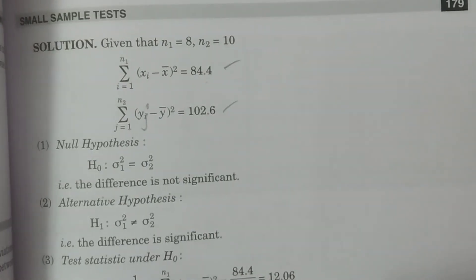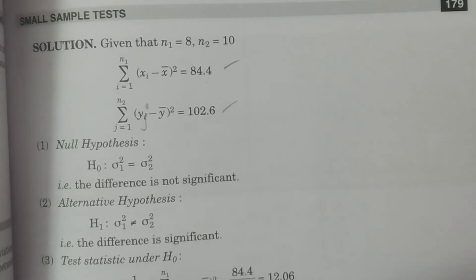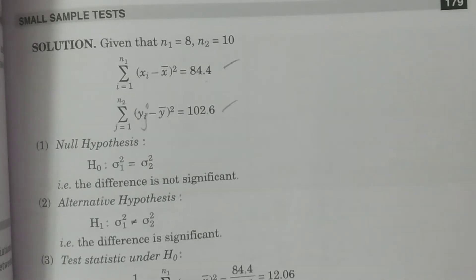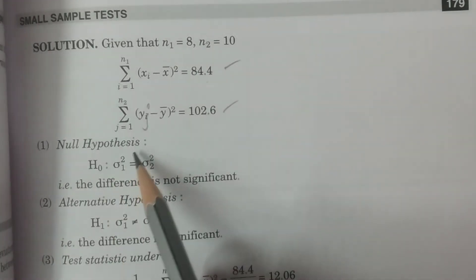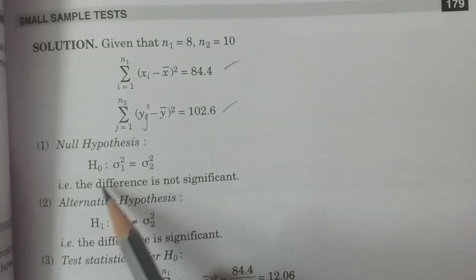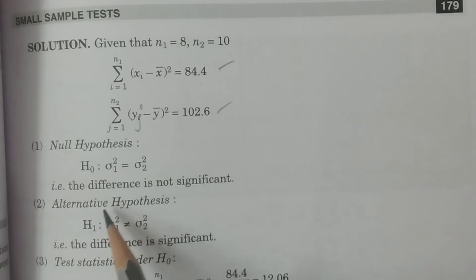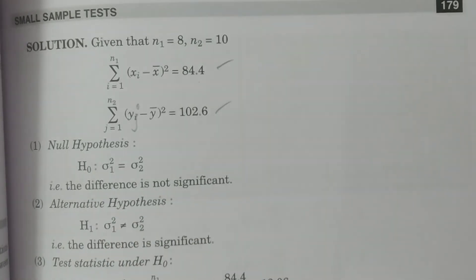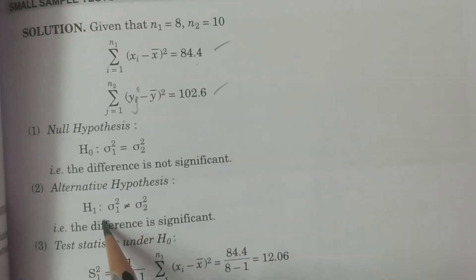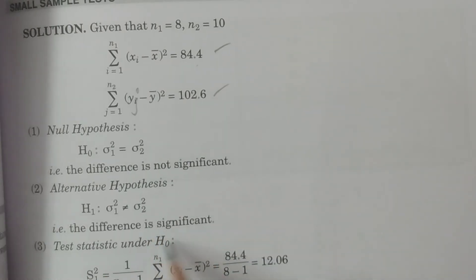Now you have to test whether this difference is significant or not at 1% level. Null hypothesis H0: σ1² equal to σ2² — the difference is not significant. Alternative hypothesis H1: σ1² not equal to σ2² — the difference is significant.